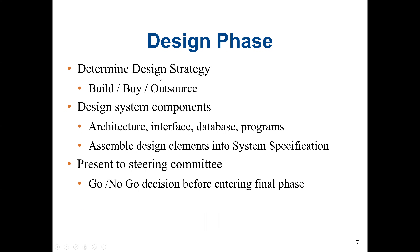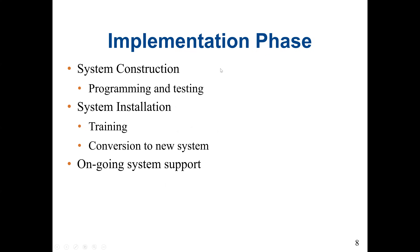In the design phase, we determine the design strategy — whether we should build a system, buy it, or outsource it. Then we come up with the design system components, such as the architecture, the interface, database programs, and we assemble design elements into system specifications. We then present our system specifications to the steering committee or stakeholders to get a go or no-go decision before entering the final phase, which is the implementation phase.